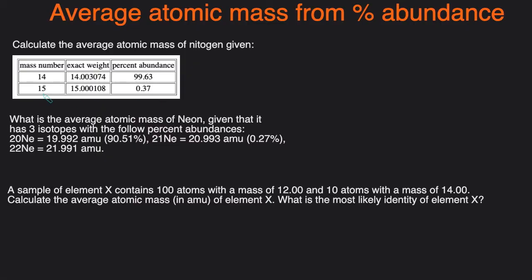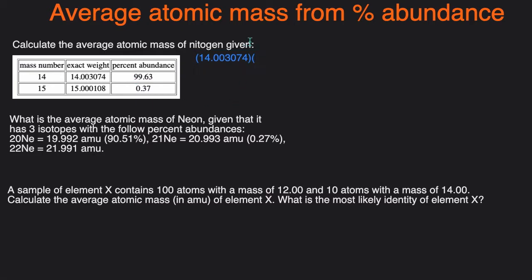When you're given the percent abundance and the mass of the isotopes and you have to calculate the average atomic mass, you can do a weighted average. The first step is to take the mass of one of the isotopes — 14.3074 — and multiply it by the percentage in decimal form. To get decimal form, take the percentage and divide it by 100.